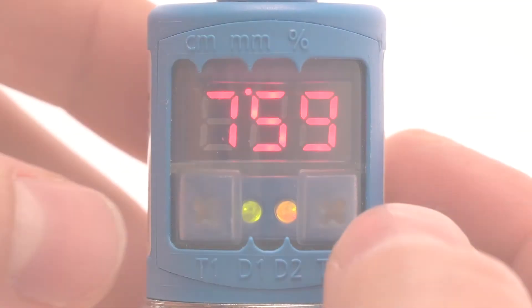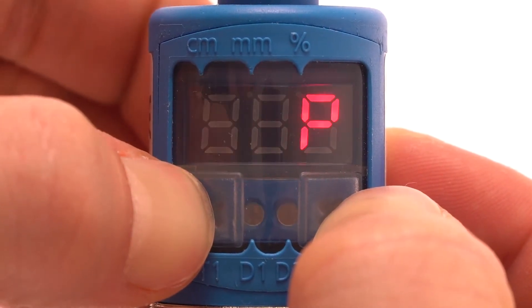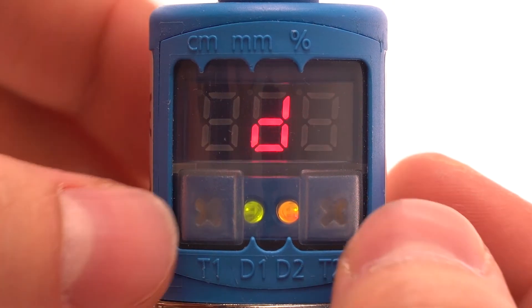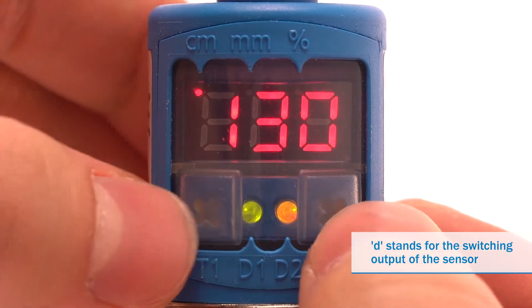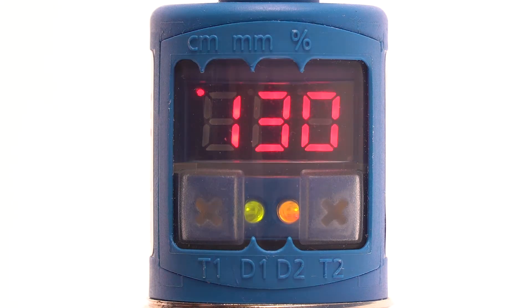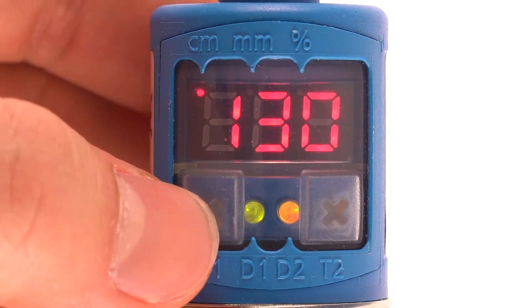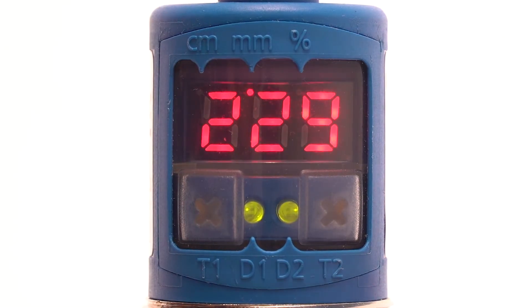Now keep T1 and T2 pressed down approximately three seconds until hello has been displayed. When D appears, simultaneously press T1 and T2. Set the switching point in millimeters or centimeters. For down press T1 and for up press T2.